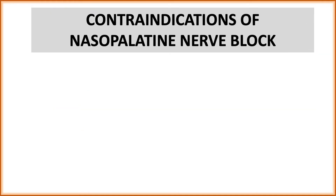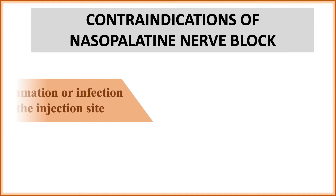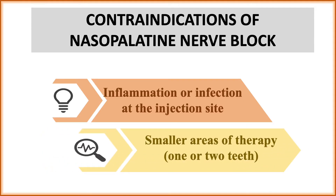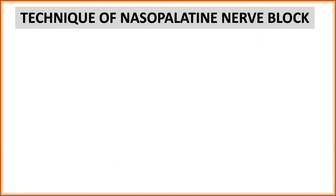The contraindications of the nasopalatine nerve block are: inflammation or infection at the injection site, and when the area of therapy involves only one or two teeth — in that case local infiltration works very well in the maxilla and a complete block is not needed.